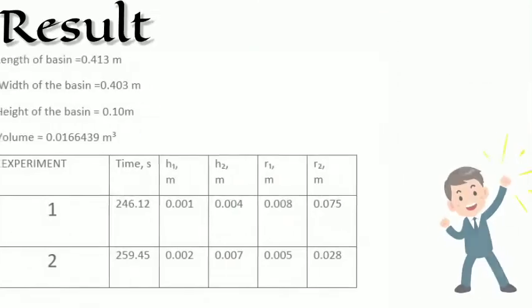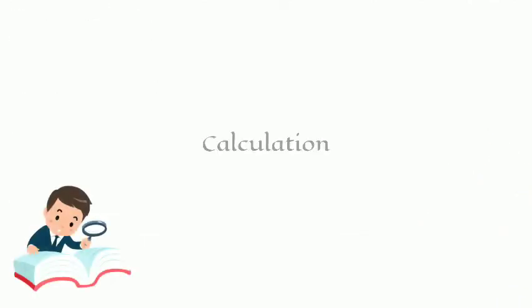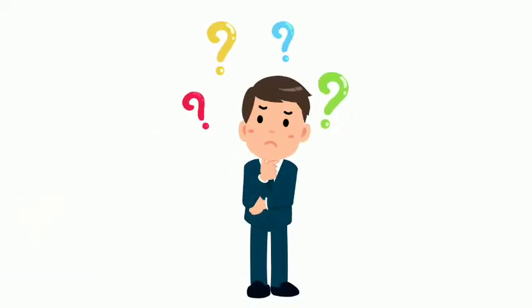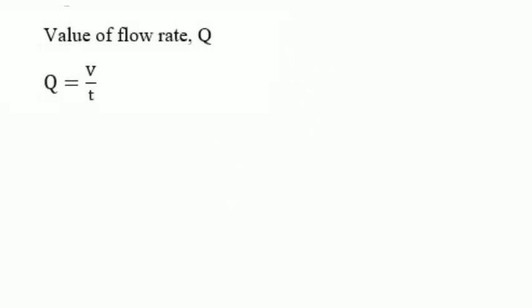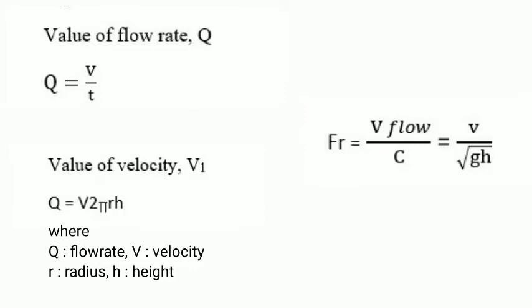This is the result of the experiment. Now, time to calculate. What formula do we use in this experiment? Value of Q: the formula we use is flow rate equals volume over time. Then, to get the velocity, we use the formula Q equals 2πRH times V. For the Froude number, we use the formula Fr equals V over the square root of gH.